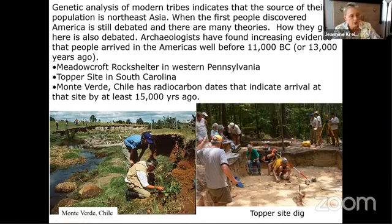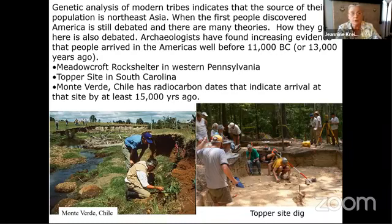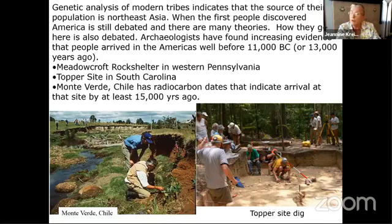One example is Meadowcroft Rock Shelter in southwest Pennsylvania near Pittsburgh, which has many stratified layers of sites. There is also the Topper site in South Carolina. Excavators had found Clovis points there and stopped digging, saying 'Clovis is the oldest, we don't have to dig anymore.' But after an event related to Monteverde, people went back and dug below the Clovis layer, finding more artifacts, a different kind of spear point, and charcoal older than Clovis — so there is a layer older than Clovis at Topper.